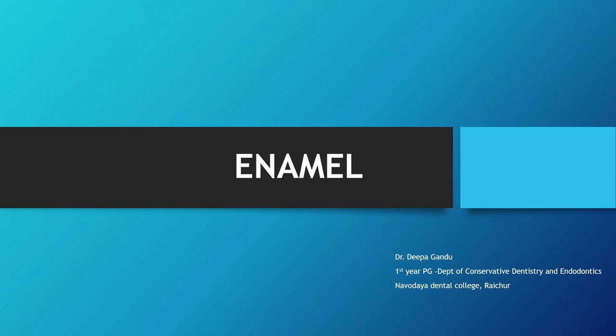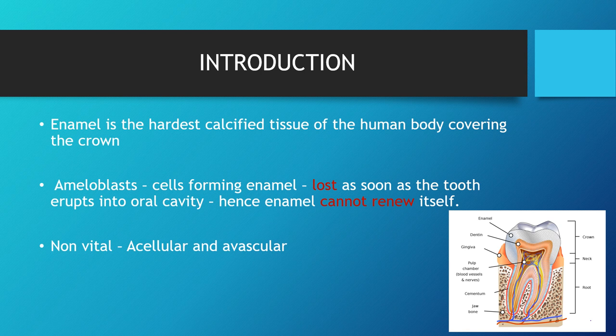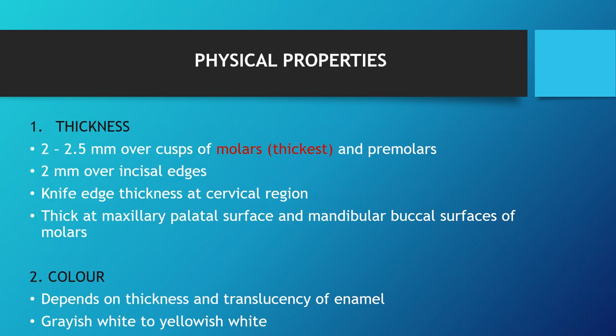Today my topic is enamel. The contents are: introduction, physical properties, chemical properties, structure of enamel, age changes in enamel, and clinical implications. Enamel is the hardest calcified tissue of the human body, covering the entire crown. The cells forming enamel are called ameloblasts, and these cells are lost as soon as the tooth erupts into the oral cavity. So enamel can only be formed once — it cannot renew itself. Enamel is non-vital, meaning it is acellular and avascular.